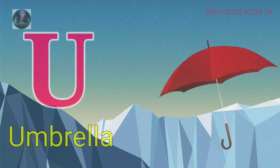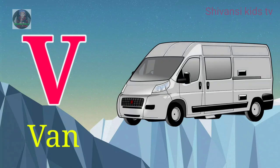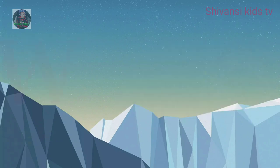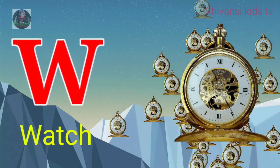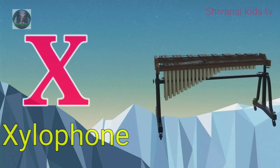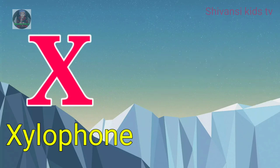U for umbrella, B for man, W for watch, X for xylophone.